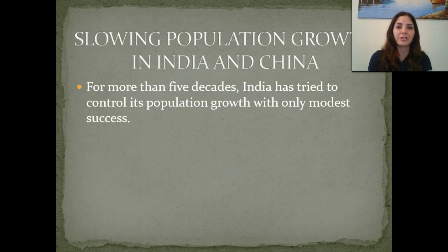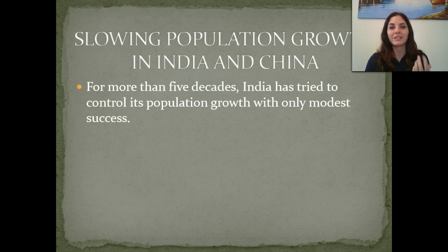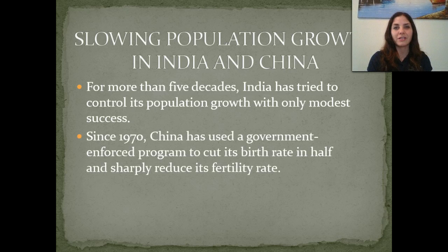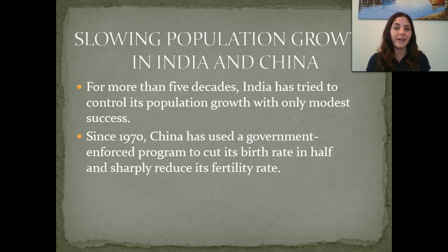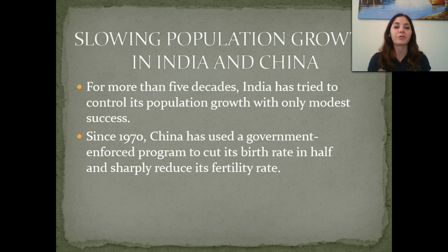Looking at slowing population growth in India and China: for more than five decades now, India has tried to control population growth, but it has only had modest success. China has been the exact opposite — it's had a huge success in controlling its population and actually decreasing population growth drastically in the last 40 years.